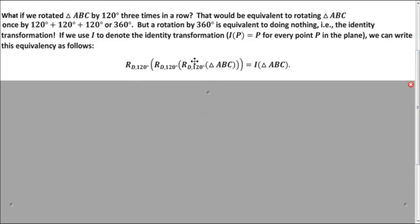And so here's a way of thinking about that using the function notation we have for rotations. Doing these three rotations of 120 degrees is just the same as the identity. If you input triangle ABC, you will get triangle ABC as an output.